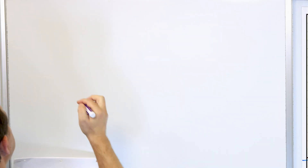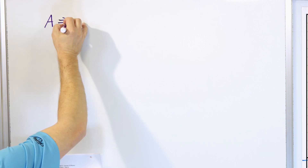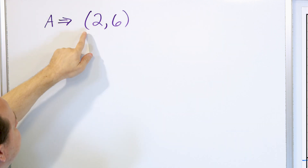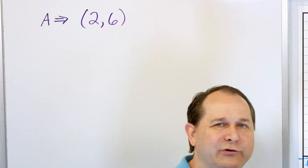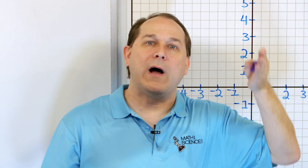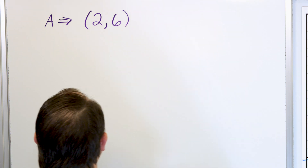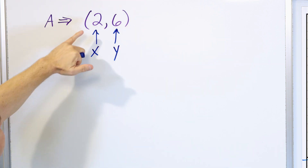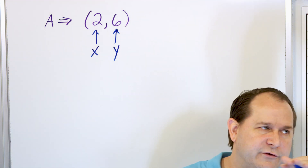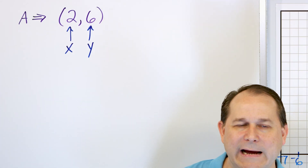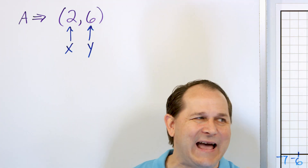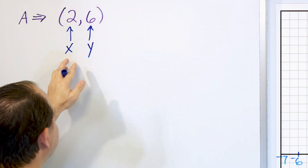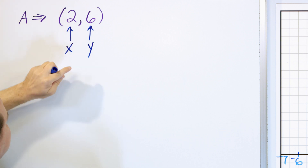Let's conquer our first problem. We want to plot point A with coordinates (2, 6). Any point on this plane is put in parentheses with two numbers — one for each axis. The first number is always the x number, and the second is always the y number. The first number you encounter is always x, the horizontal direction. The second is always y, the vertical direction. Always x, y — remember that, because going forward I won't label them.